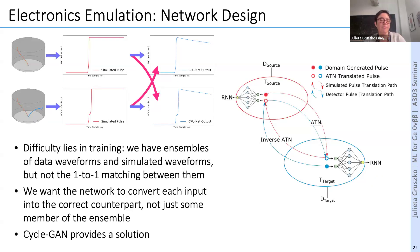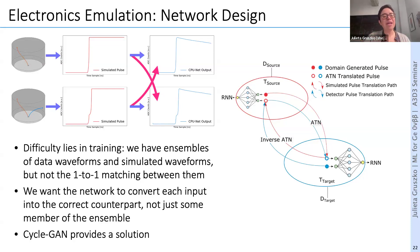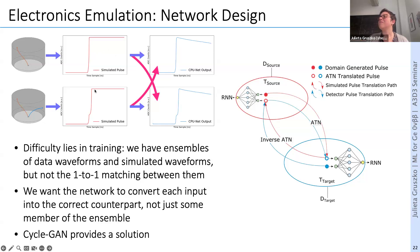We had the idea that emulating the electronics would allow more accurate background modeling and potentially fitting out event positions in our detectors. We'd also love to deconvolve the electronics response from data waveforms to improve pulse-shape discrimination performance. The tough part is training: we have large ensembles of data waveforms and simulated waveforms, but we don't know the one-to-one match between them. I want the network to take a waveform and make it look like the equivalent waveform in data, preserving multi-site as multi-site and single-site as single-site — not just any member of the ensemble.